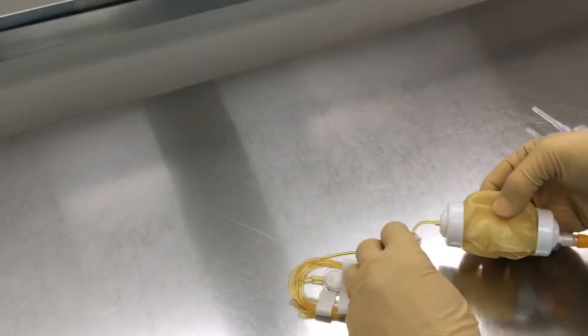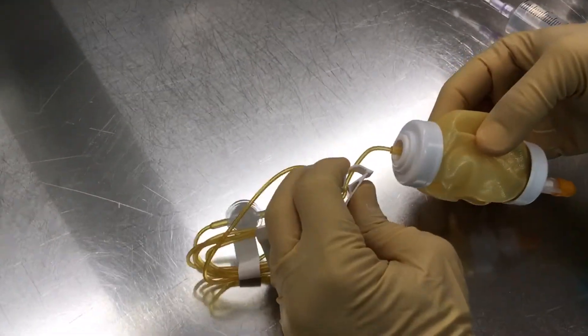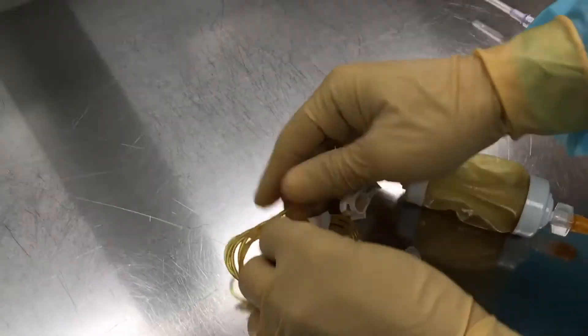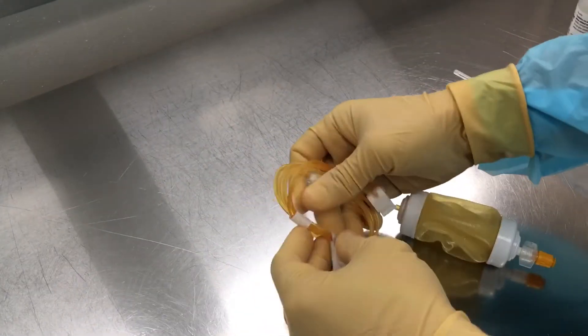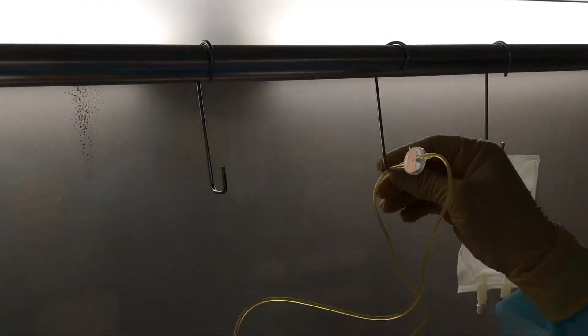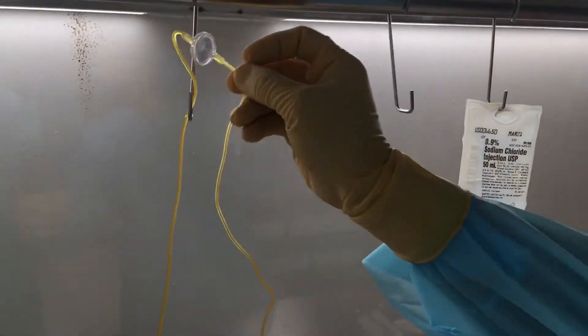Step one: we're going to prepare the tubing by clamping and untangling it. This little air filter must be positioned above the level of the pump, so the best way to do it is to hang it on the rod inside the hood. There you go.